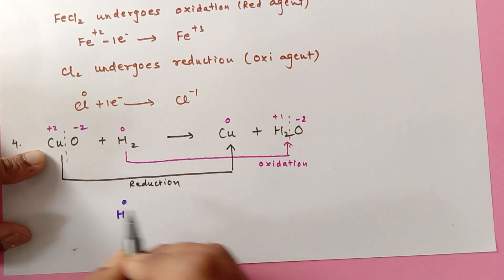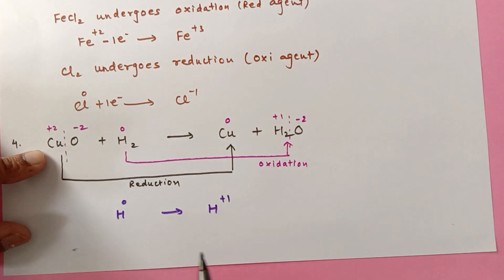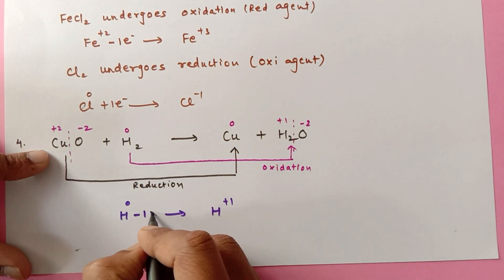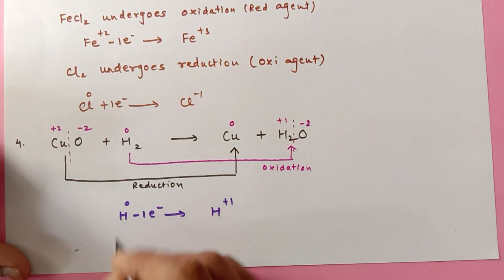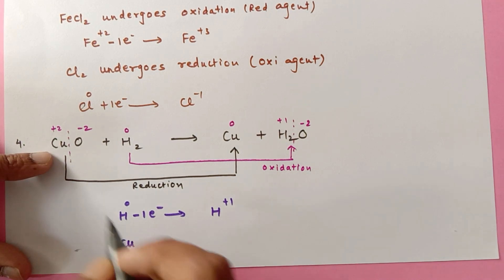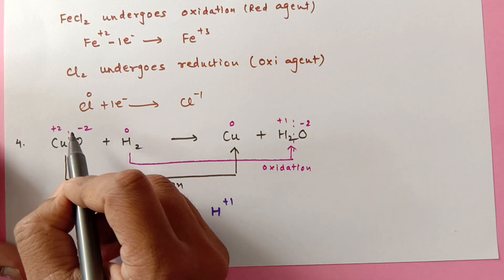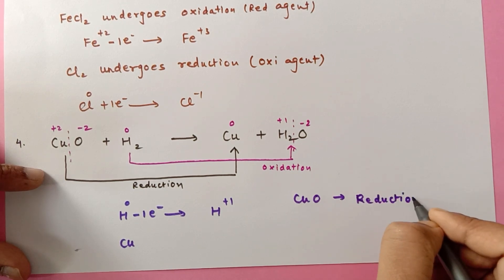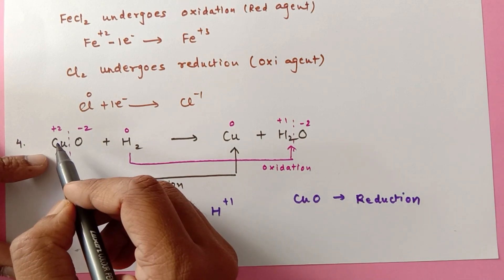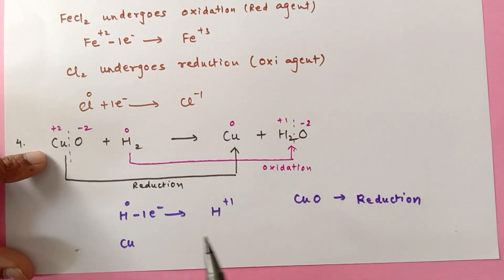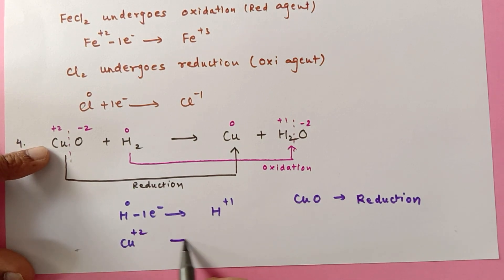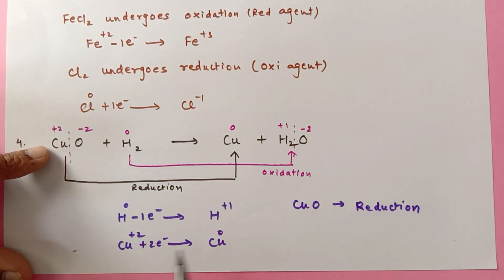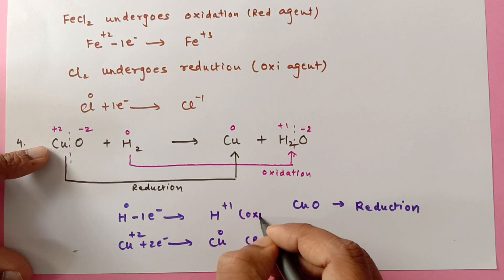For the electron equations: hydrogen was zero, and now hydrogen is plus one, which means hydrogen has lost one electron, because when something becomes positive it loses electrons. Copper Oxide undergoes reduction — it is not just Cu²⁺ but the whole compound. Cu²⁺ becomes Cu zero, meaning it has gained two electrons, because after gaining two electrons the protons and electrons become equal and the total charge is zero. So this is the reduction half-equation and this is the oxidation half-equation.